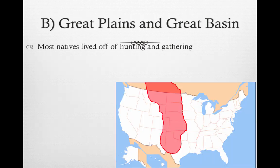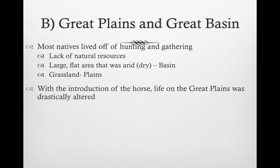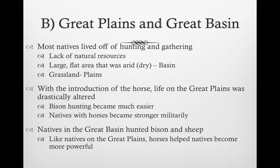Let's jump to the Great Plains and the Great Basin. Here in red is the Great Plains — most natives here lived off of hunting and gathering. The Great Basin on the west is a large flat, very arid area, while the plains were mostly grassland. With the later introduction of the horse from the Spanish, life on the Great Plains was drastically altered: bison hunting became much easier, and natives with horses became stronger militarily. This also helped natives in the Great Basin who hunted bison and sheep.